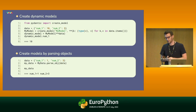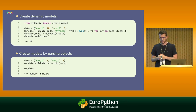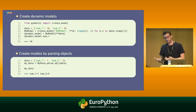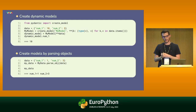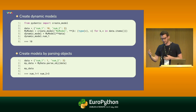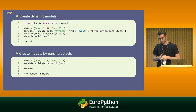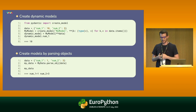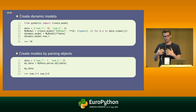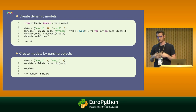Another frequently used feature is the ability to instantiate a class by parsing an object. In a similar scenario, you can have a YAML configuration file that you read and transform into a Python dictionary. By calling the parse_obj method on your Pydantic model and passing that data, you create a new instance of the object that you can then use throughout your code.